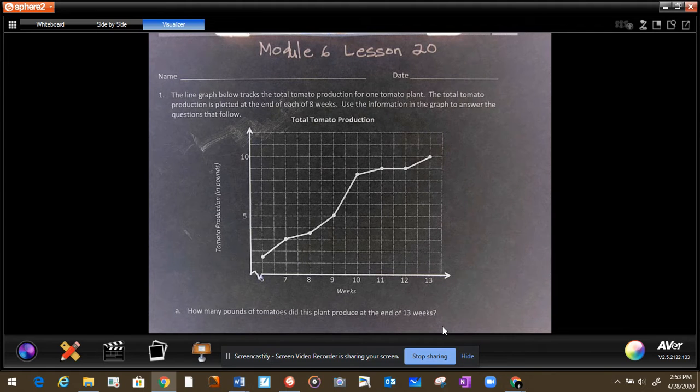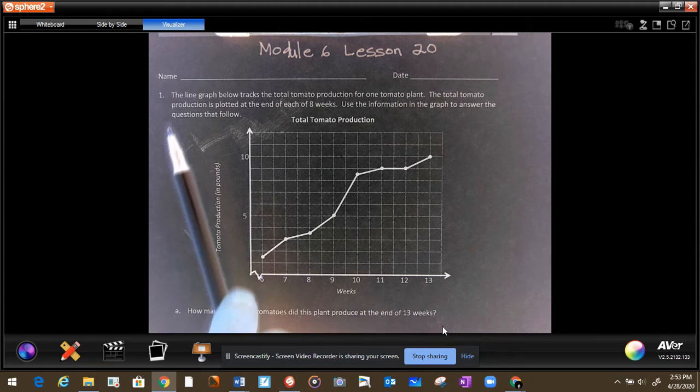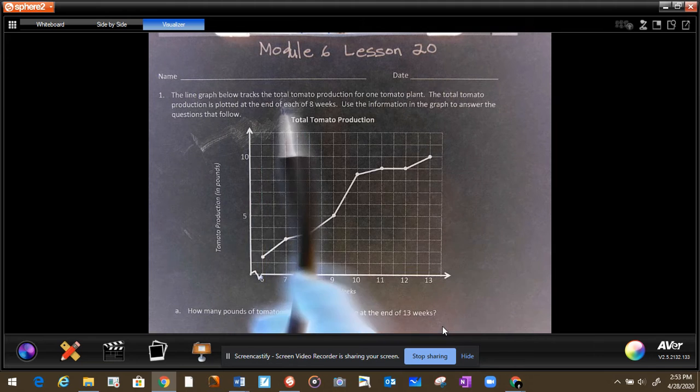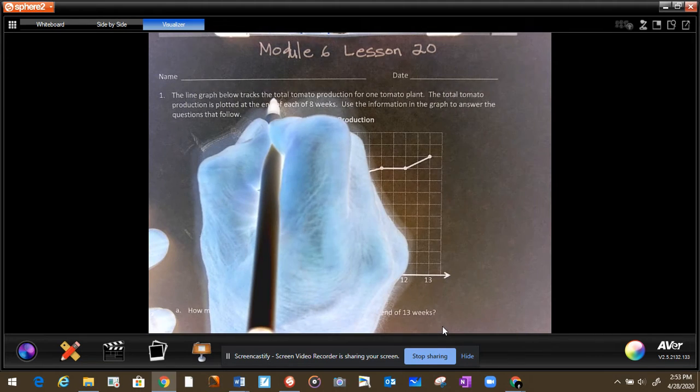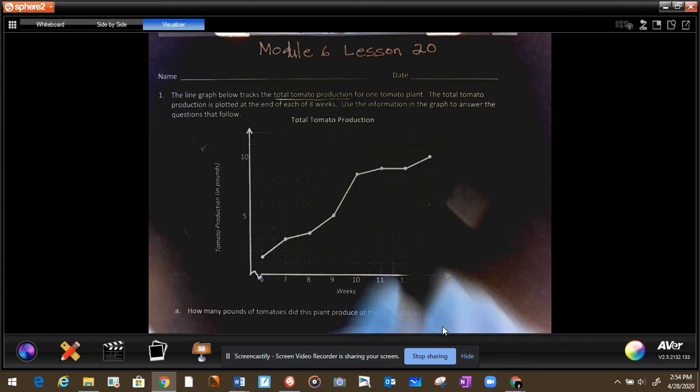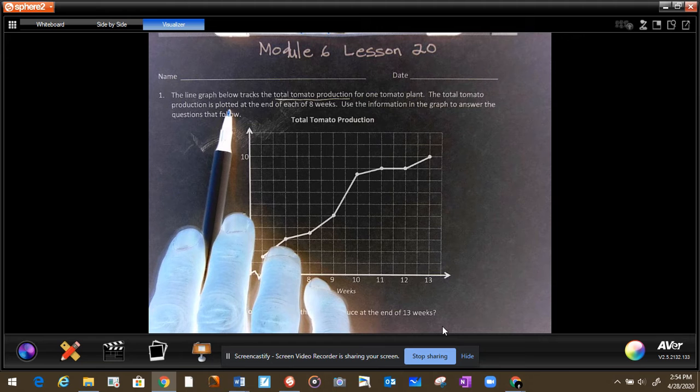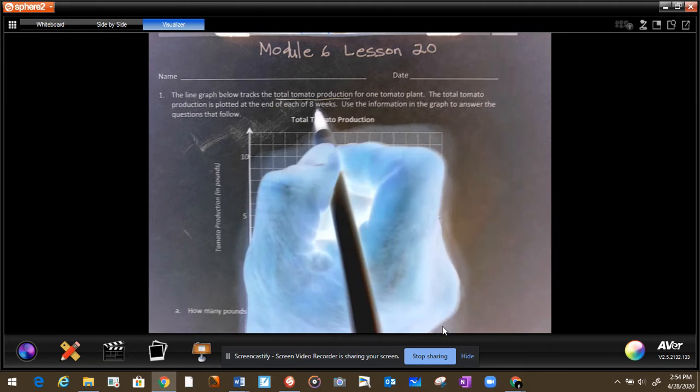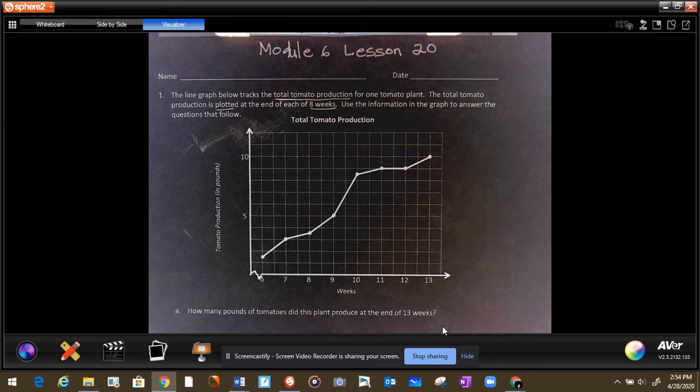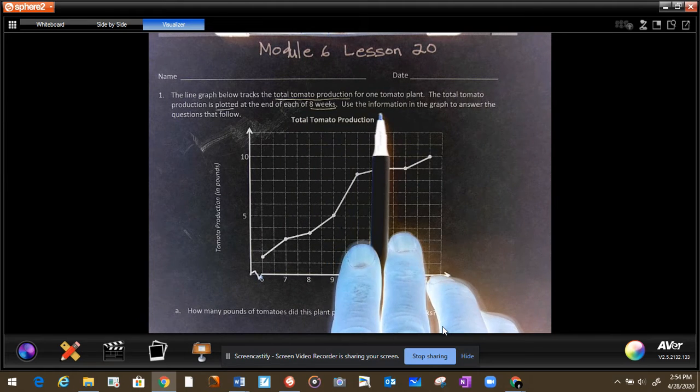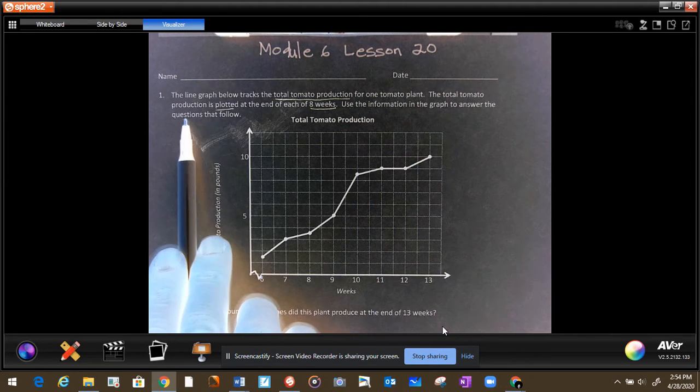Now today we've been learning how to graph. Today we're going to read some graphs and answer questions based on what we read. First you have to read the instructions. The line graph below tracks the total tomato production for one tomato plant. The total tomato production is plotted at the end of each eight weeks. So every eight weeks they plot a point. Use the information in the graph to answer the questions that follow.